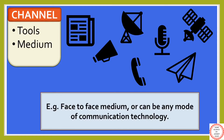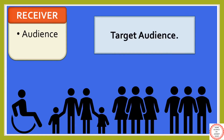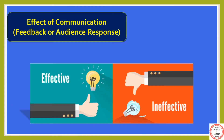The next is receiver. Receiver is the target audience. Target audience refers to a similar age group or geographical location of the people whom you are about to communicate with. The last one is the effect of communication, or we can say feedback or audience response.